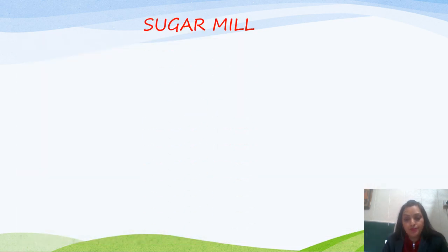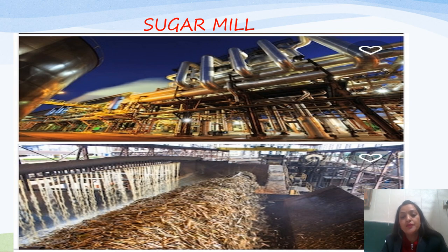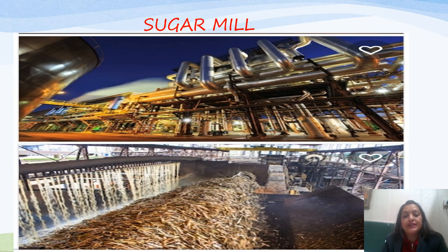The next most important agro-based industry is the sugar mill. This is the picture of the sugar mill, where sugar cane goes into the factory for making sugar and jaggery. As we studied in the previous lesson, India is the leading producer of sugar cane in the world, and Uttar Pradesh is the leading producer state of sugar cane in India. Other states are Maharashtra, Madhya Pradesh, Bihar, Punjab, and Tamil Nadu, so most of the sugar mills are located near these states.